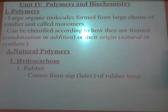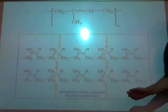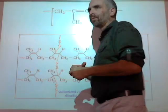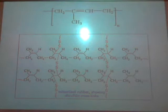Guar gum is another natural polymer. You'll see guar gum as an additive to many things you eat — it's edible. We're going to use it to make slime. Guar gum is in gum and other things as a thickening agent.